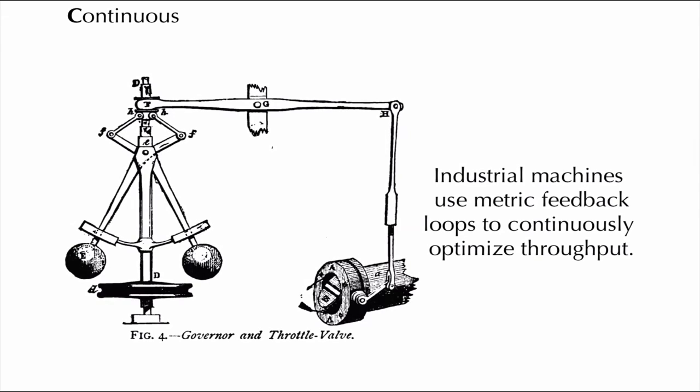Controlling throughput is well understood in the domain of industrial design. This is Maxwell's governor from the 19th century. The faster the steam exits the pipe, the faster the balls spin round. Centripetal force moves the assembly of levers to throttle the pipe, resulting in a continuously sustained flow, no matter how hot the fire.